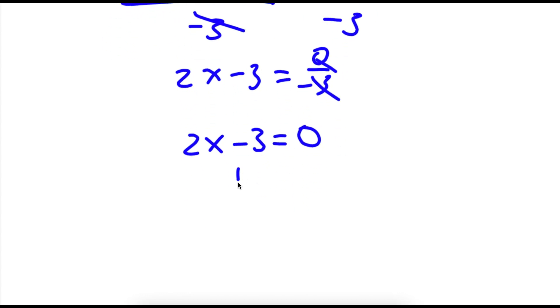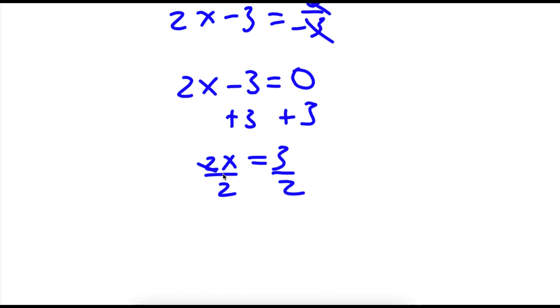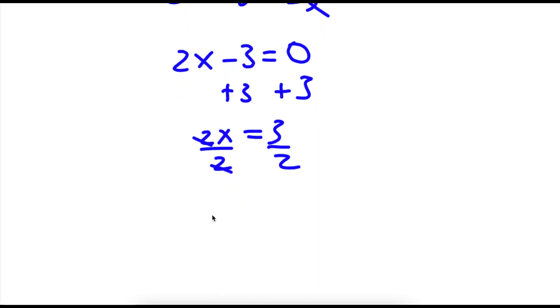Now if I add 3 on both sides, I get 2x is equal to 3. Now I can divide by 2 on both sides, so then these two cancel out and I'm left with x is equal to 3 over 2.